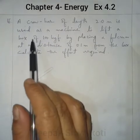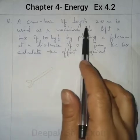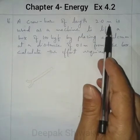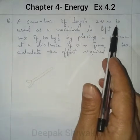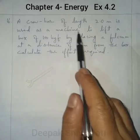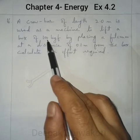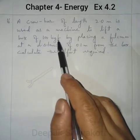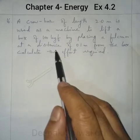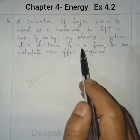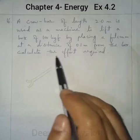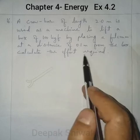Question number 16: A crowbar of length 2 metres is used as a machine to lift a box of 100 kgf by placing a fulcrum at a distance of 0.1 metres from the box. Calculate the effort required.